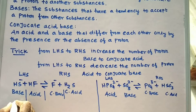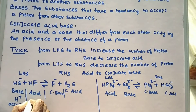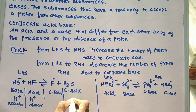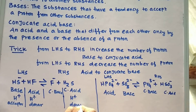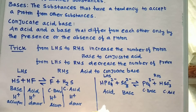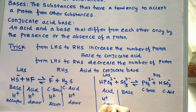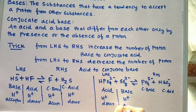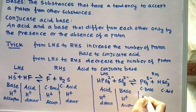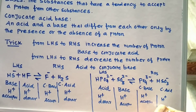To summarize: a base is a proton acceptor and an acid is a H⁺ donor. Similarly, a conjugate base is a H⁺ donor and a conjugate acid is a H⁺ acceptor. On the LHS, one species acts as a H⁺ donor and the other as a H⁺ acceptor; on the RHS, the conjugate base acts as a H⁺ acceptor and the conjugate acid acts as a H⁺ donor.